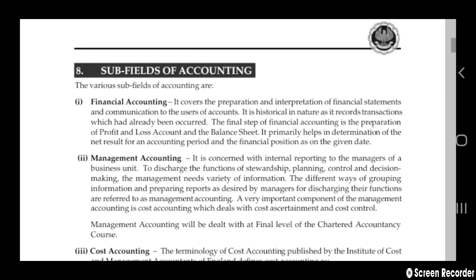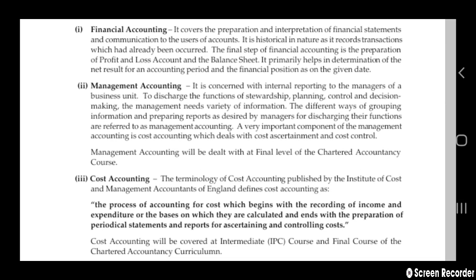Next are the sub-fields of accounting. There are not only one field in accounting — accounting has sub-fields like management accounting and financial accounting. The first one is financial accounting, which covers the preparation and interpretation of financial statements and communication with the users of accounts. It is historical in nature, recording transactions that have already occurred. The final step of financial accounting is the preparation of profit and loss accounts and balance sheets. It primarily helps in determination of net results for an accounting period and financial position.